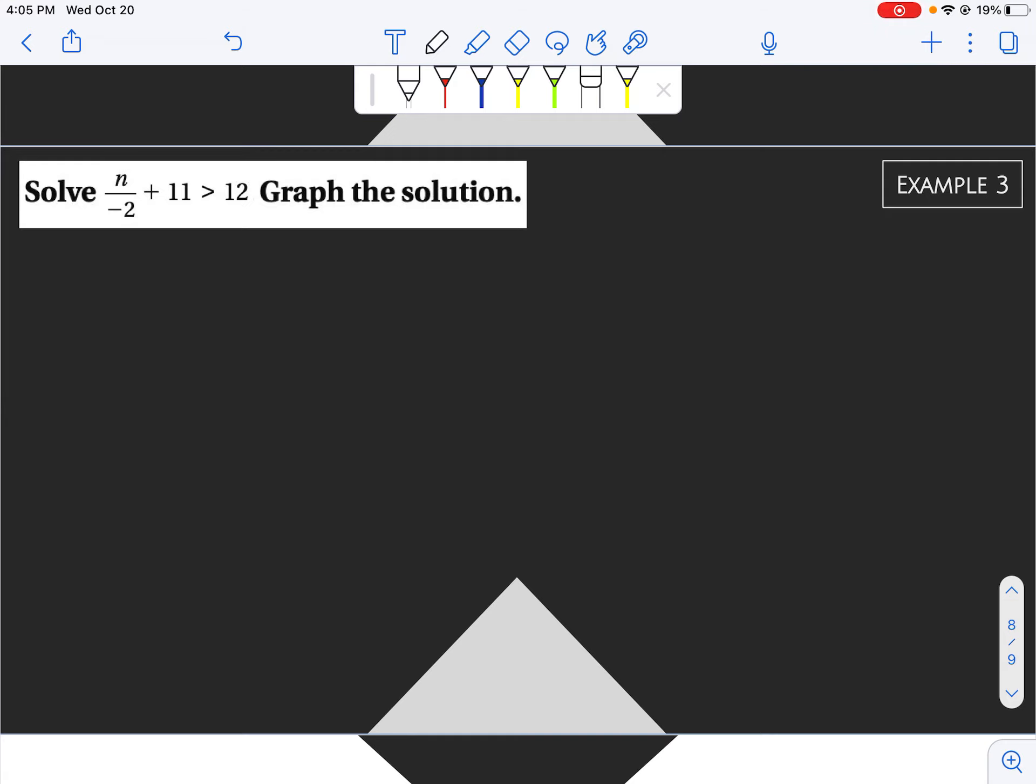With our last example, we have n divided by negative 2 plus 11 is greater than 12. Start away from n, so we need to subtract 11 from both sides. Notice I subtracted a negative number, but that doesn't mean I'm switching my sign.